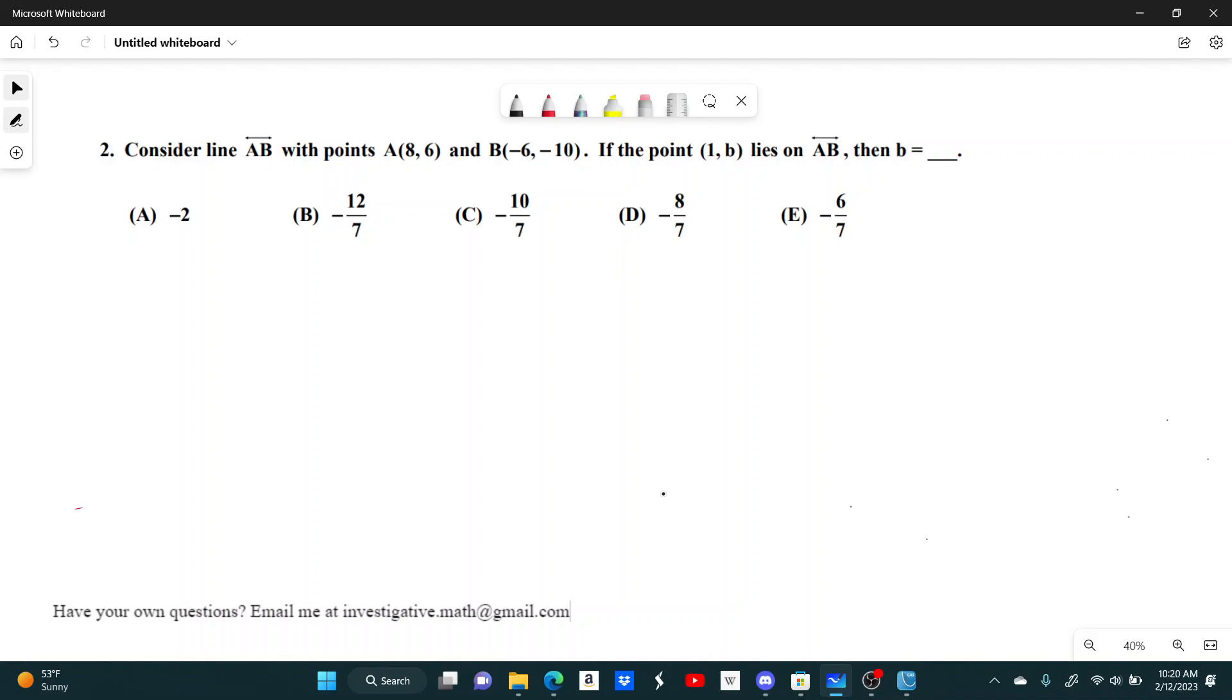This is a pretty classic problem of getting a line from two points. First thing I'm going to do is find the slope of this line. The slope is the change in Y divided by change in X. If we go from A to B, our change in Y from 6 to negative 10 would be negative 16, and our change in X going from 8 to negative 6 would be negative 14. If I simplify this a little bit, I get a slope of 8 sevenths.